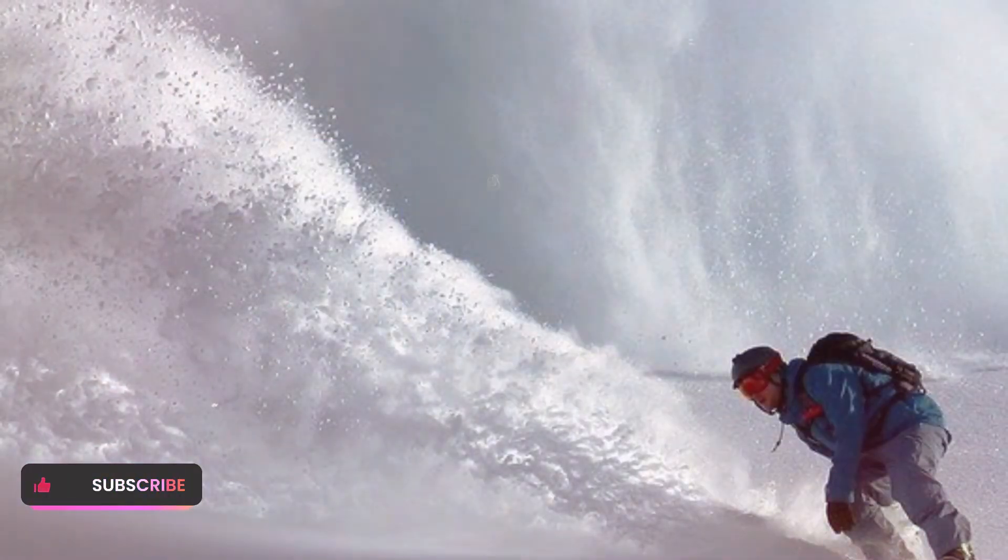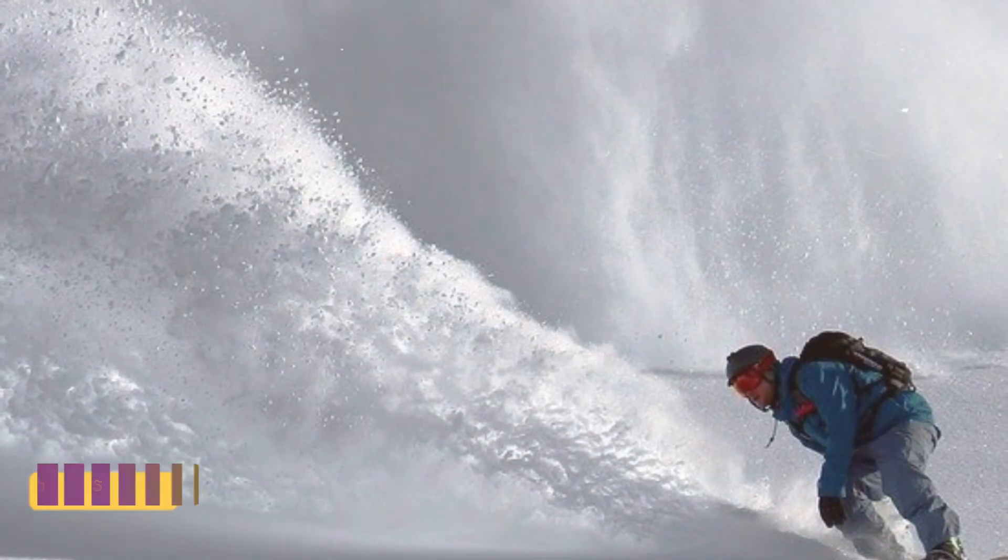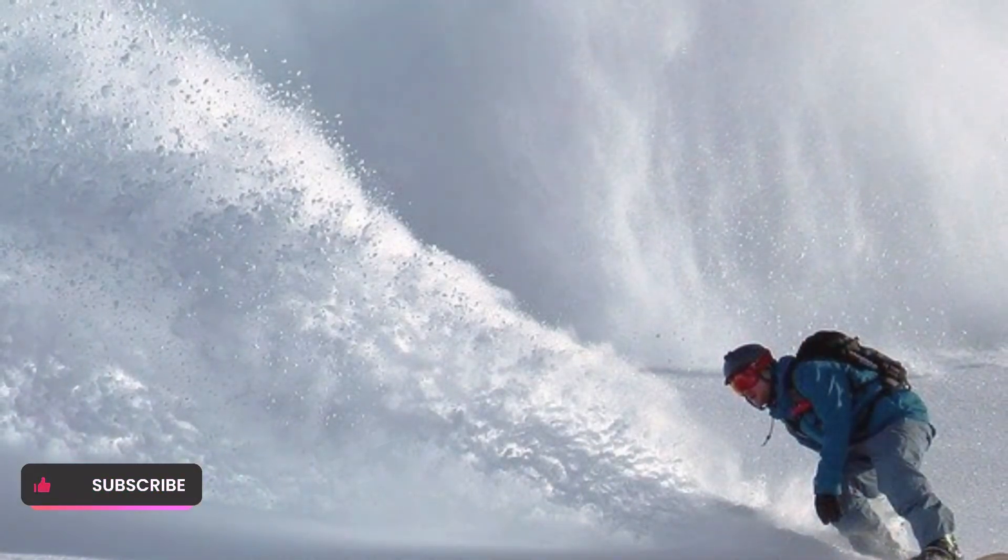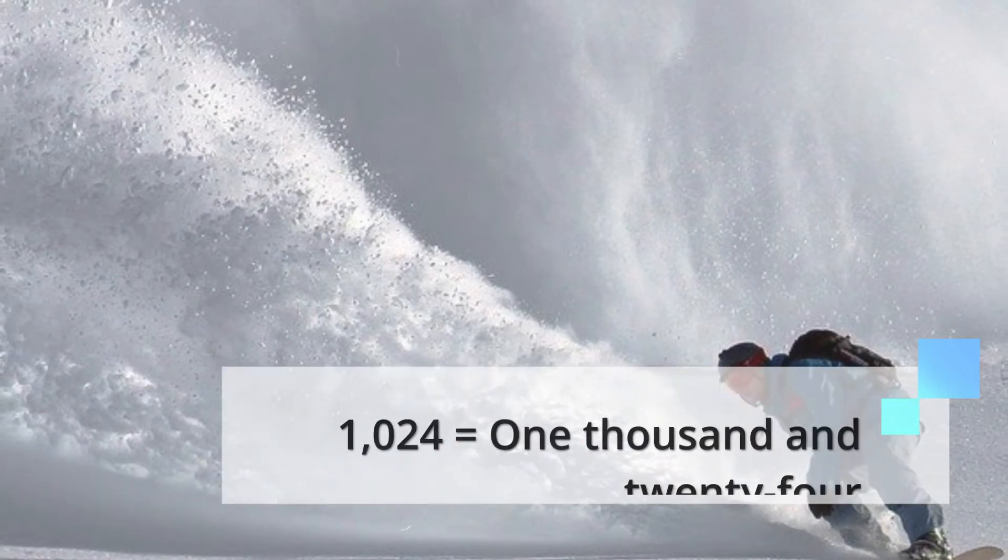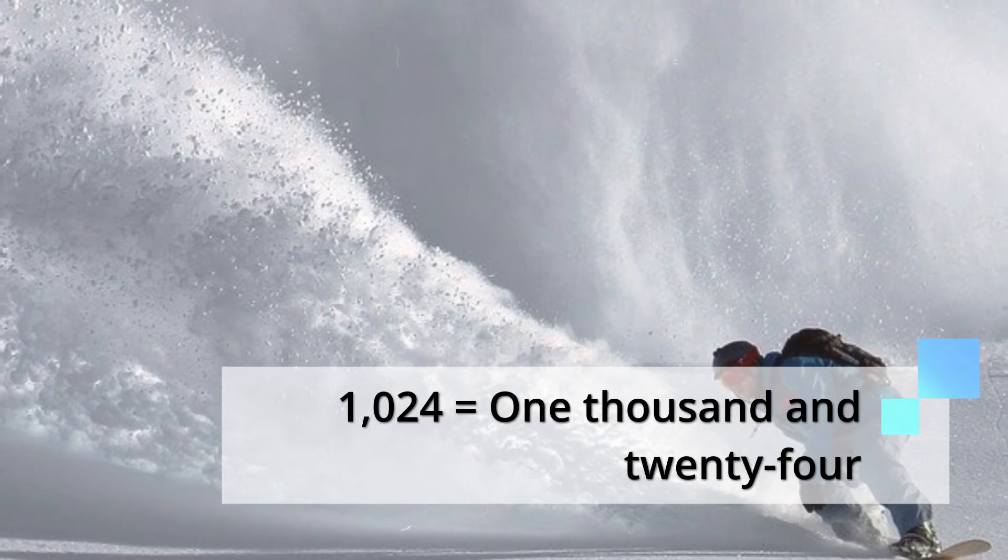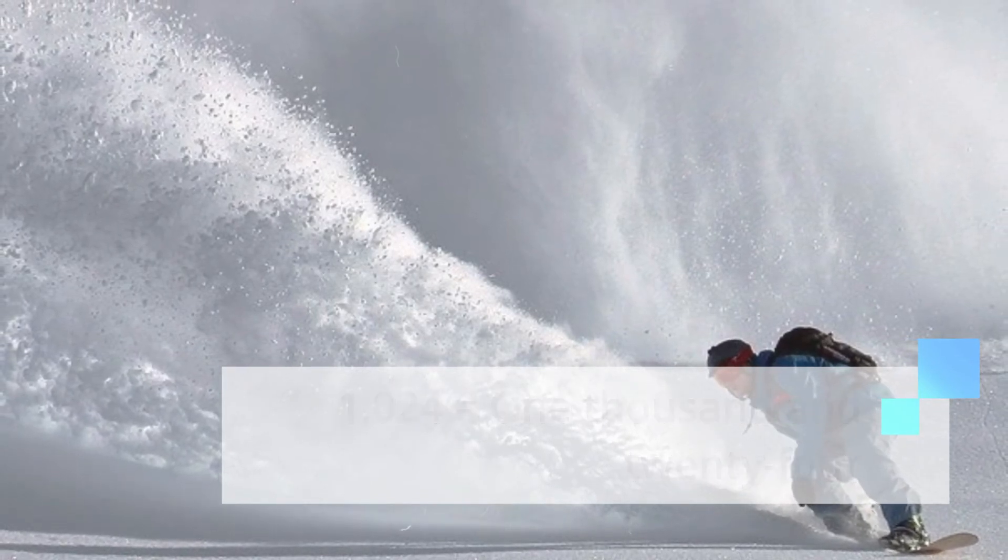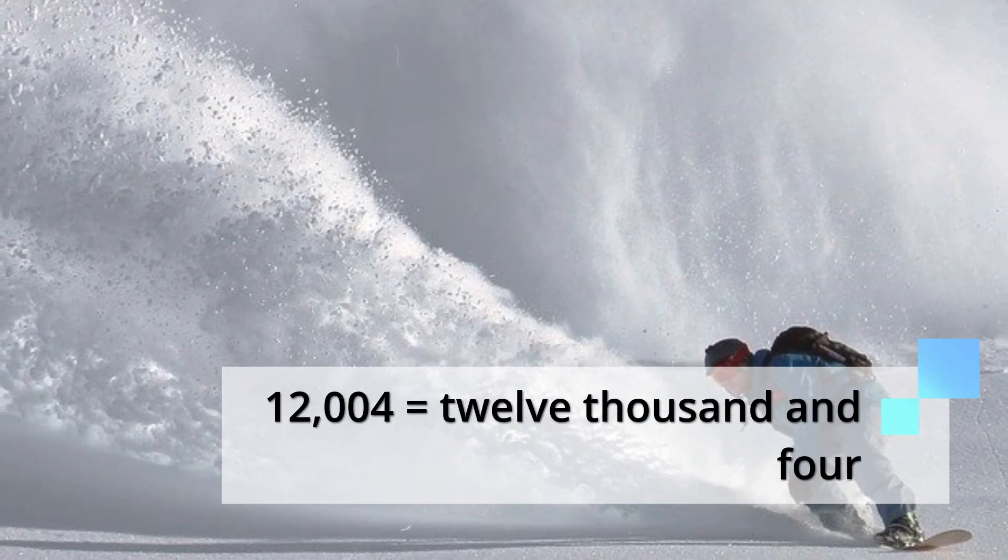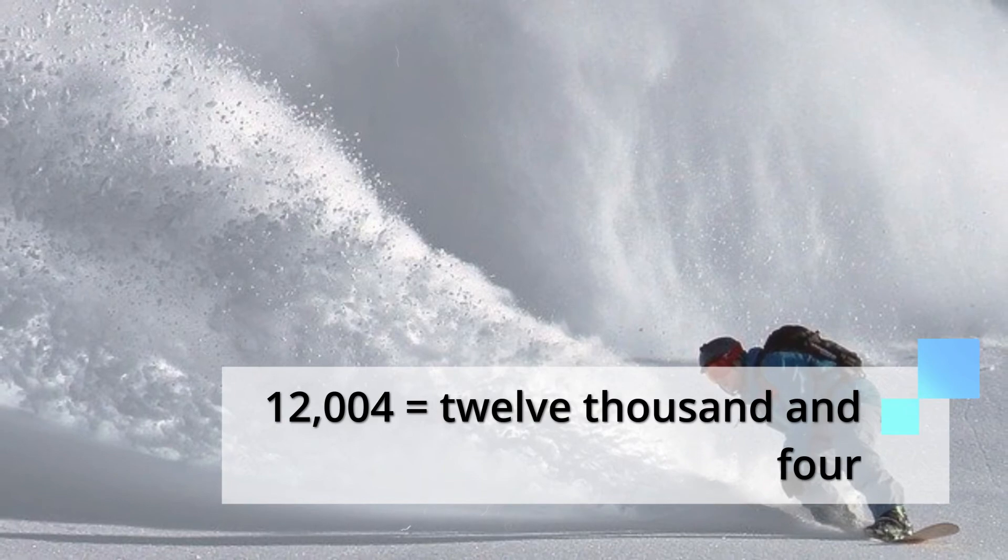Remember that the comma is the thousand separator in English. In a decimal, we read each digit as its own. There are no tens or hundreds, just individual units of the digits. This is how you would read this number in English: 1.024, 12.004. Remember that the comma is the thousand separator in English.